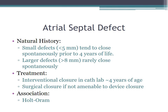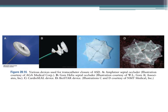The natural history of ASDs: small defects, typically less than five millimeters, tend to close spontaneously, usually prior to four years of life. Larger defects, greater than about eight millimeters, rarely close spontaneously. Interventional catheter closure is recommended around school age for most ASDs. If there are no good anchor points for device closure, surgical closure is the next option. The association to remember is Holt-Oram syndrome. Many devices can be used for closure, including the Amplatzer device, Gore-Helix septal occluder, Cardioseal, and Biostar.